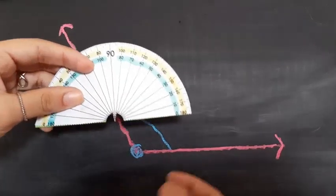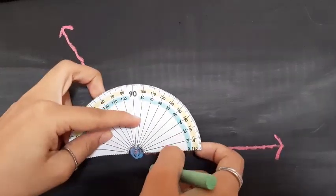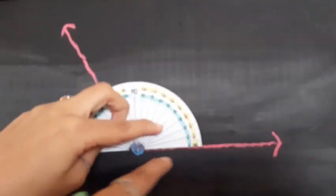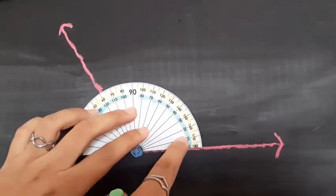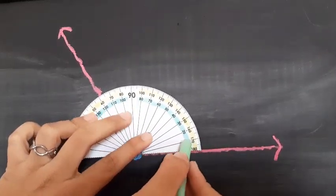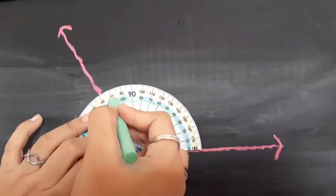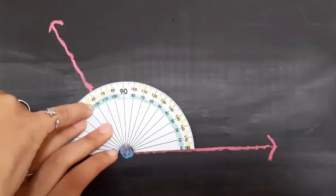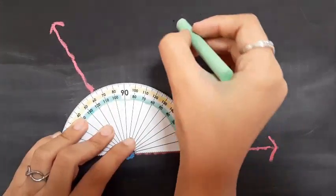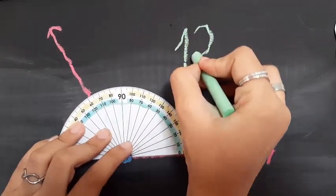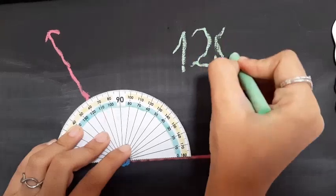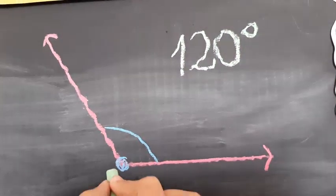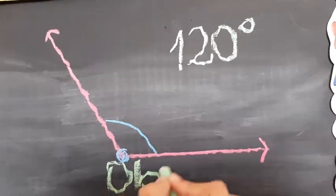Now, another example. I place the center point of the protractor on the vertex and the edge of the protractor matches the bottom line of the angle, and I measure. And as you can see, this angle measures 120 degrees, which means that this angle is an obtuse angle.